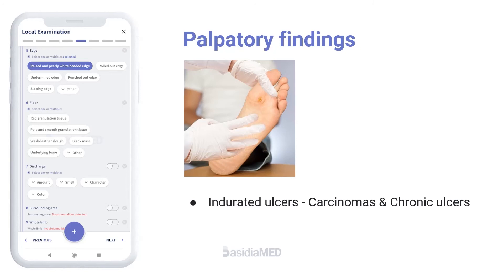On palpation, the different types of the edge of the ulcers are corroborated with the findings of inspection. Marked induration or hardness of the edge is a characteristic feature of a carcinoma. A certain degree of induration is expected in any chronic ulcer, whether it is a gummatous ulcer, a syphilitic chancre, or a trophic ulcer.